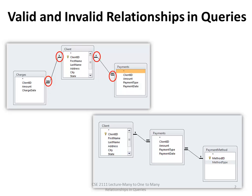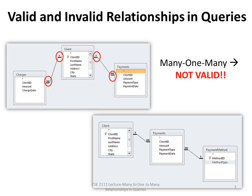In this case, we have a many-to-one-to-many relationship between the tables: many charges, one client, many payments. When we have a many-to-one-to-many relationship in Microsoft Access using the QBE grid, we cannot create a valid query in just one step.